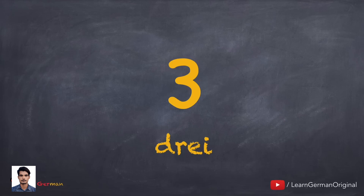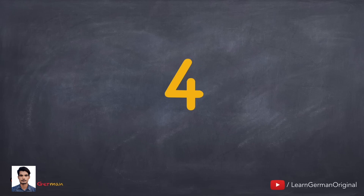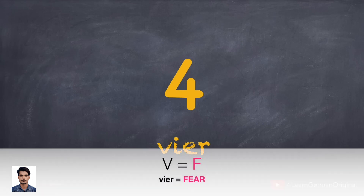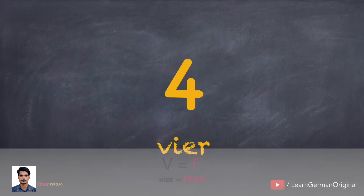Drei. The next one is Vier. The pronunciation is similar to the English word 'fear.' We have already learned that the German V has the same sound as the English F.